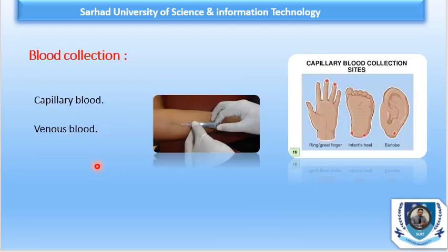When performing DLC, we require blood to make a peripheral blood smear. We need either capillary blood or venous blood — normally we take venous blood. If capillary blood is used, different collection sites are available: fingers, heel, or ear lobes.